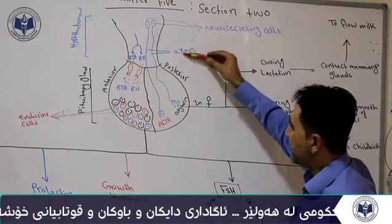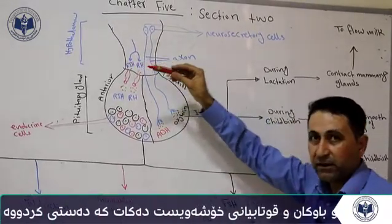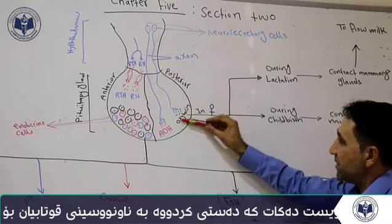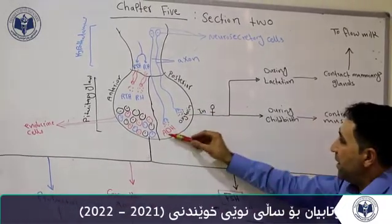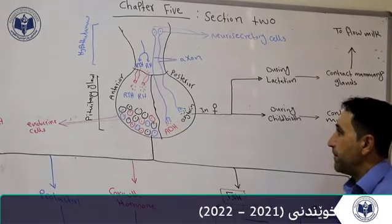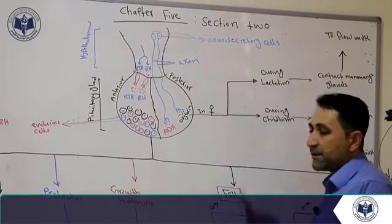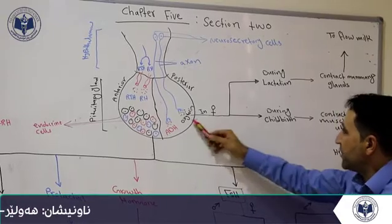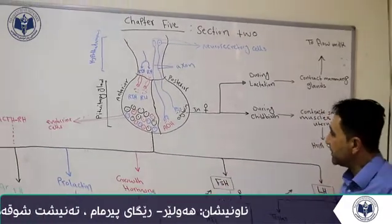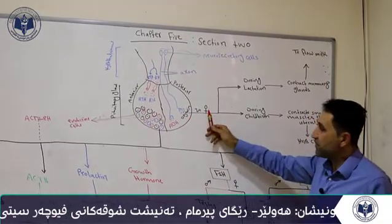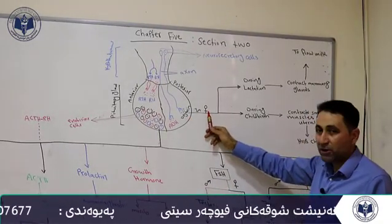The hypothalamus is connected to the posterior lobe via axons. These neurosecretory cells produce two hormones: oxytocin and ADH, which stands for anti-diuretic hormone. These two hormones are transported to their targets via the blood. Oxytocin is produced by both males and females, but only the female function is mentioned in the book.